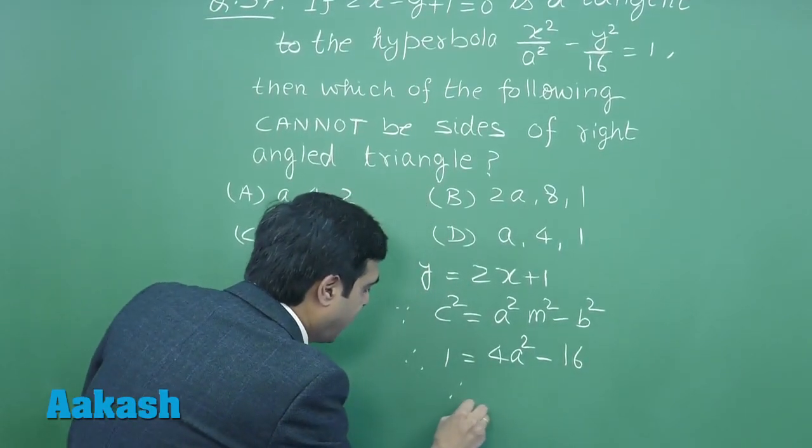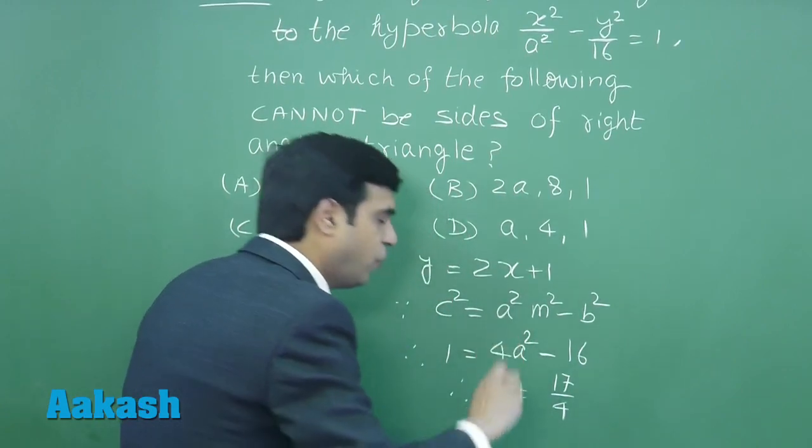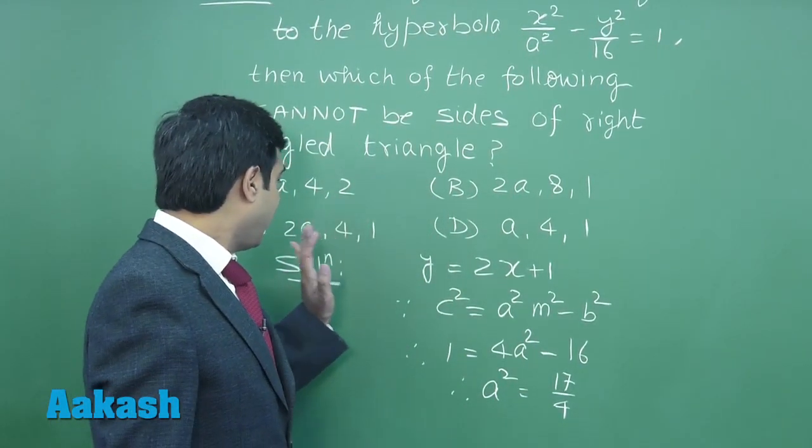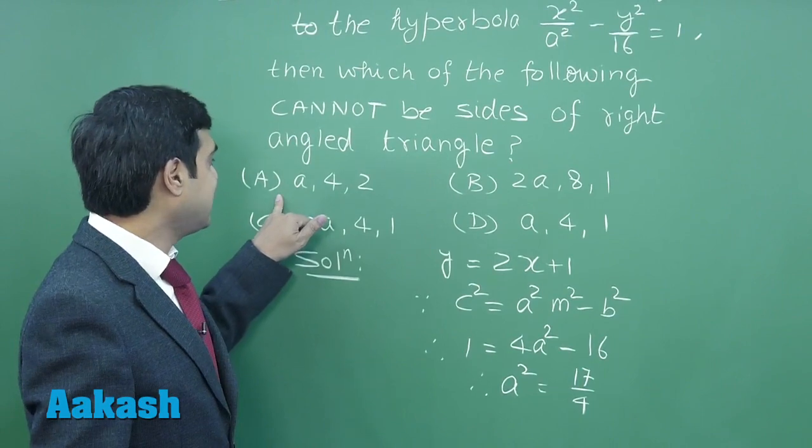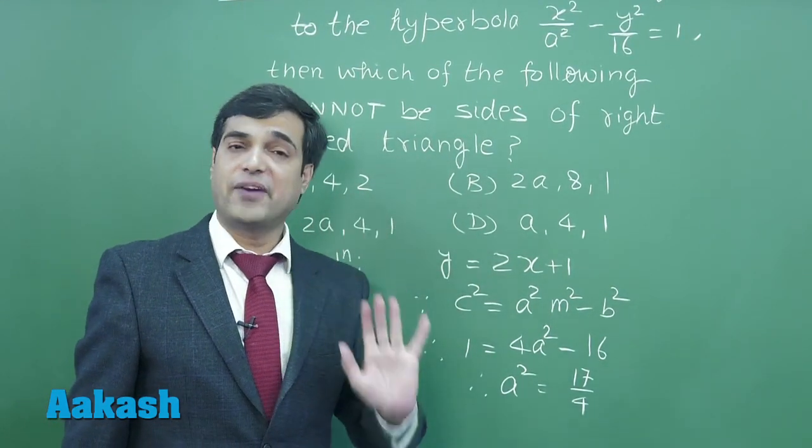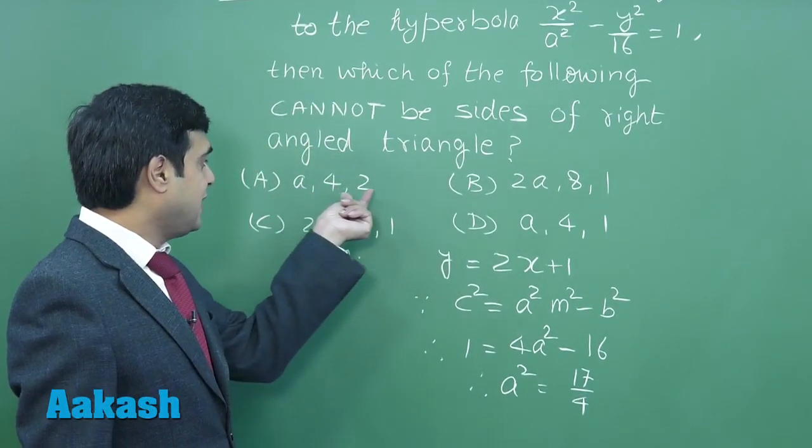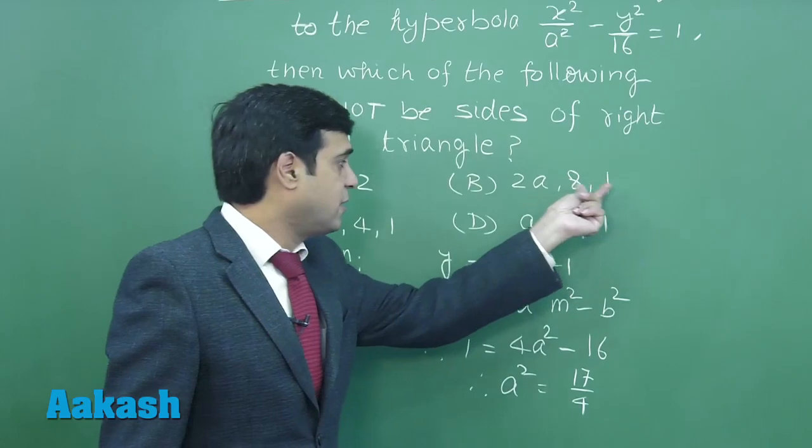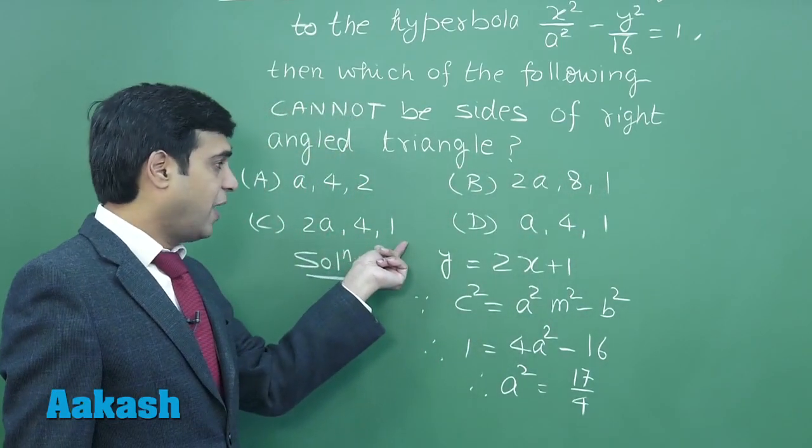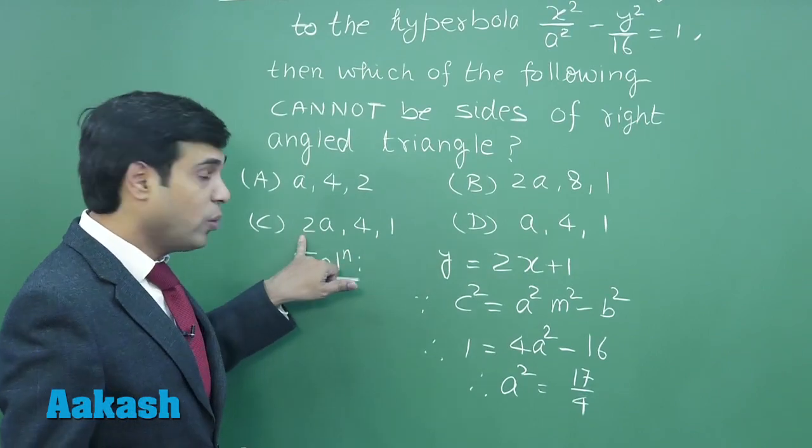Now look at four options. If I consider option number A which says 4, 2 as the sides for possible right angle triangle, squaring gives 16, 20, and here 64, 1, 16, 1, 16, 1. If I look at option C, 2a whole square, that is 4a², this gives me 17.